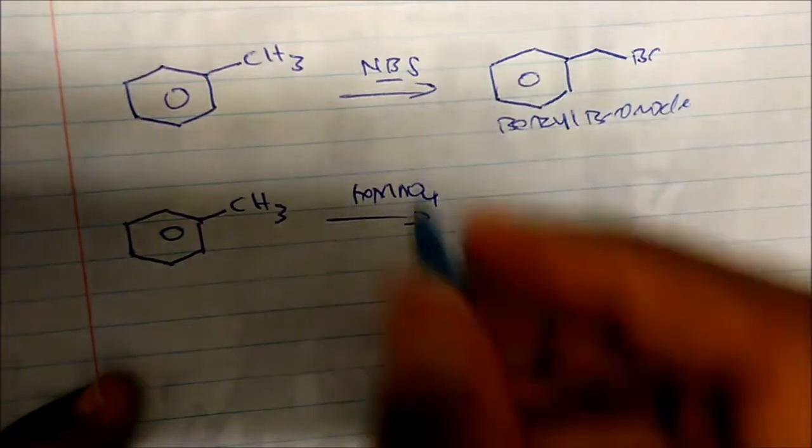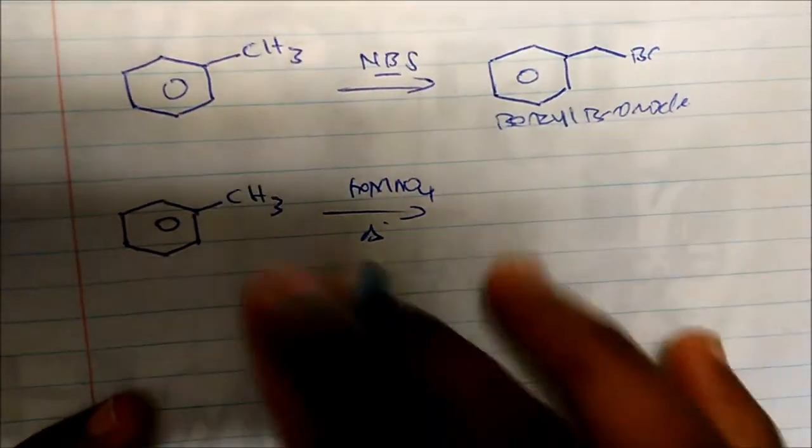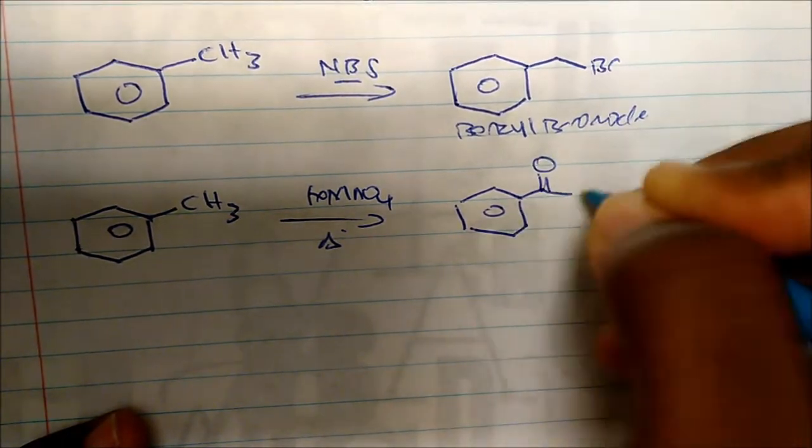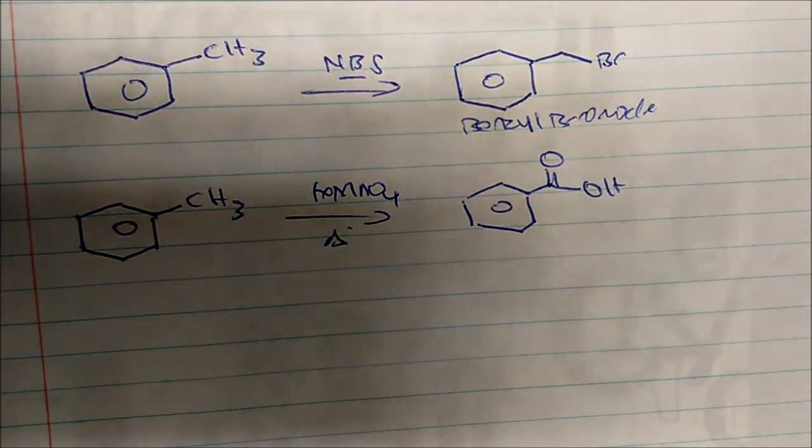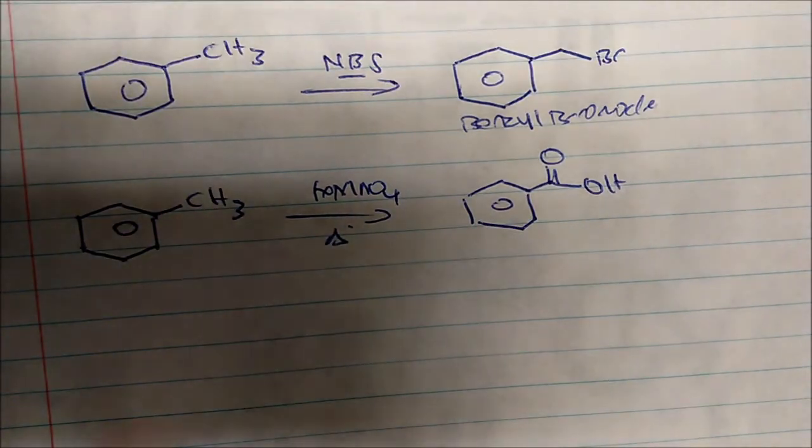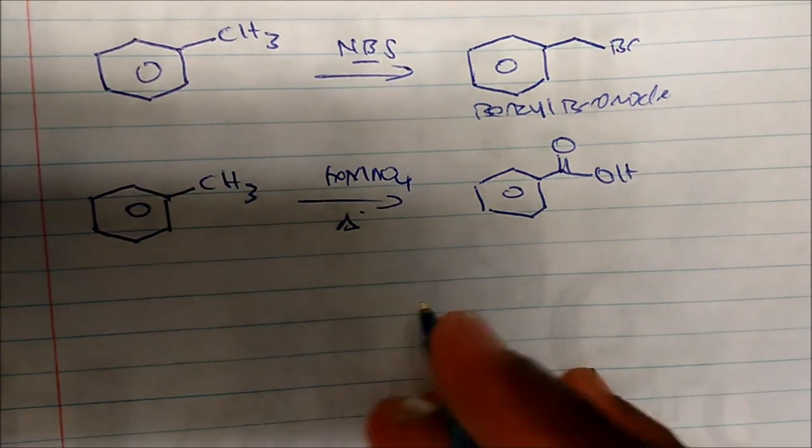It's a strong oxidizing agent, and if we add this in heat, which is what the delta stands for, we produce the carboxylic acid. Now any R group that's out there, I will get a carboxylic acid from potassium permanganate.